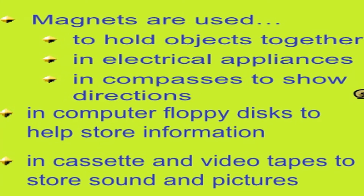We use magnetism to hold objects together, like in electric appliances. In your refrigerator, when you open the door, there is a layer of rubber on the inside, and inside that rubber there is a layer of magnet. So when you close the door, it is tightly bound. Similarly, in doors and in motors, we use magnets to connect or hold objects together.